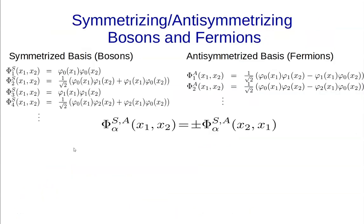As we saw in the previous class, we have the symmetrized and anti-symmetrized bases for n-particle systems. They will be symmetrized or anti-symmetrized depending on whether the particles are bosons or fermions. We expressed them in terms of single-particle orbitals — this is the so-called first quantization basis — and these basis functions are either symmetric or anti-symmetric with respect to the exchange of two particles.